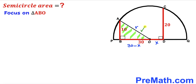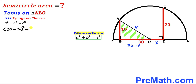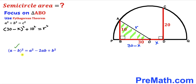We're going to focus on right triangle ABO and apply the Pythagorean theorem: a² + b² = c². In our case, the hypotenuse is r, and the two legs are 10 and (30 − x). Substituting, we get (30 − x)² + 10² = r². Expanding using the identity (a − b)² = a² − 2ab + b², we get 900 − 60x + x² + 100 = r².